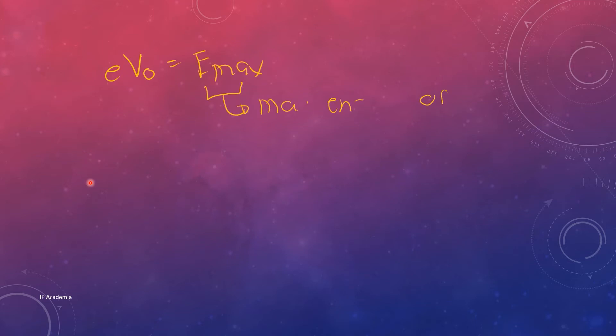So if we have a certain V0 here, which refers to the potential applied to our anode-cathode system, and E times V0 is equal to Emax, wherein Emax here is the maximum energy of the electrons emitted from our anode, we will describe V0 here as the stopping potential or stopping voltage.